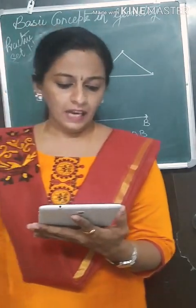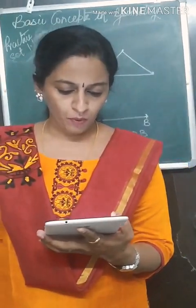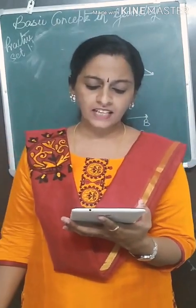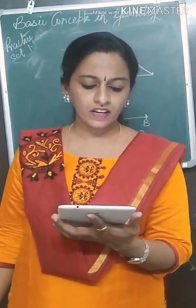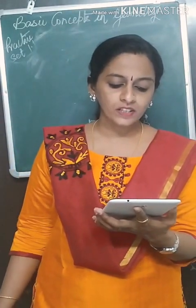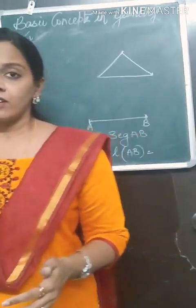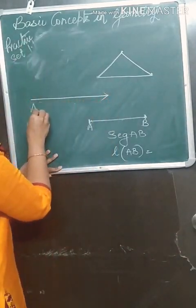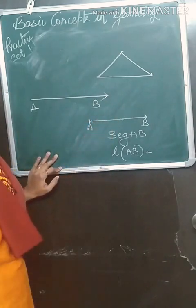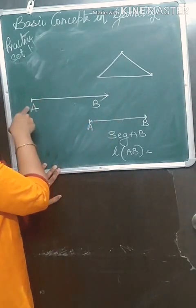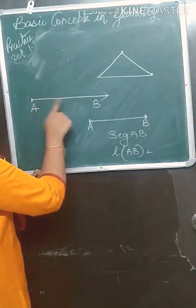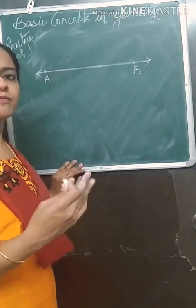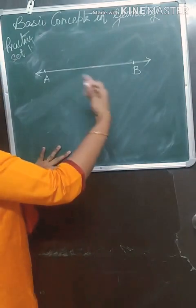Next we have ray AB. A and B are two distinct points. The union of all points on segment AB and the points P such that A-B-P is called ray AB. Point A is called the end point of ray AB. A ray is always named from its end point.